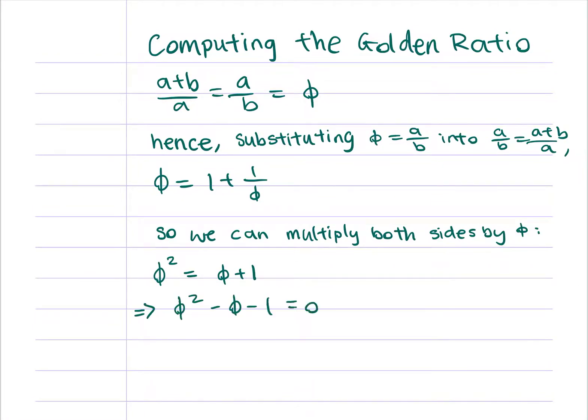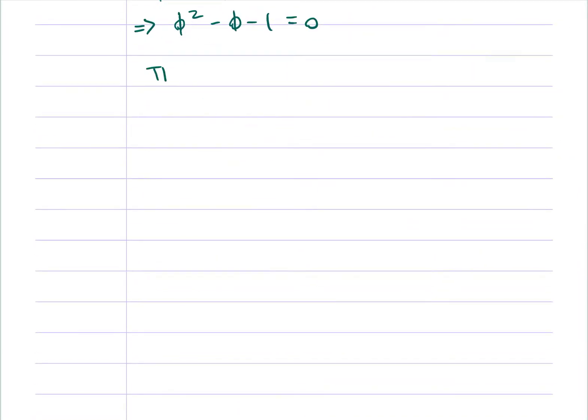And then we can manipulate that some more to get phi squared minus phi minus 1 equals 0 and that's a quadratic equation which means it has two solutions. Phi equals 1 plus or minus square root of 5 over 2, which is approximately equal to plus or minus 1.618033.